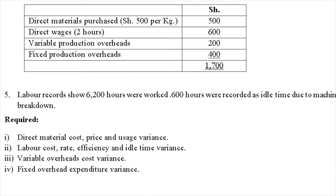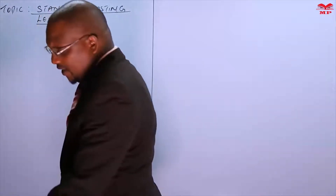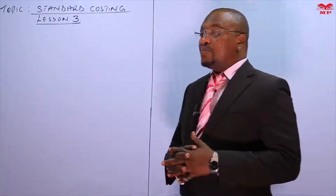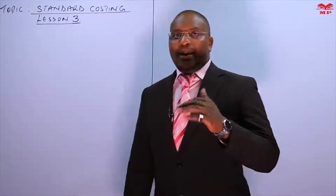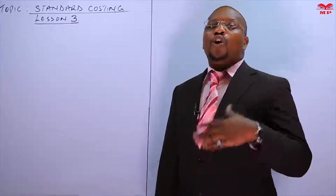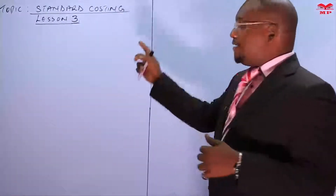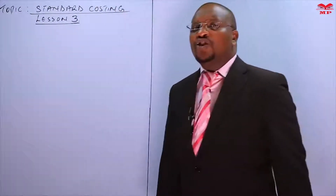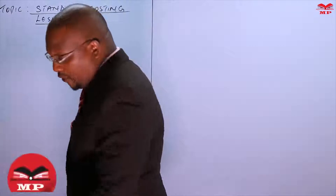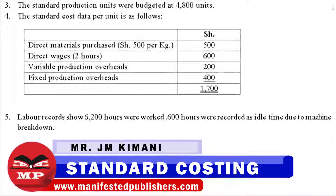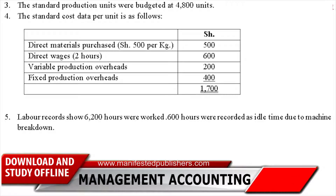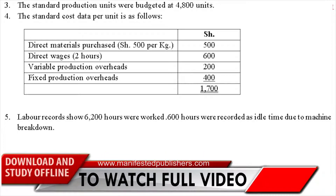The question has asked us about materials and labor, and for the variable and fixed, only one each. But we are going to use this question as an illustration to do all the variances as per the structure given in lesson two. The starting point is to complete the standard cost card given in note number four — you have the materials shillings per kg but no number of kgs, wages hours but no price per hour, and similarly for variable and fixed.